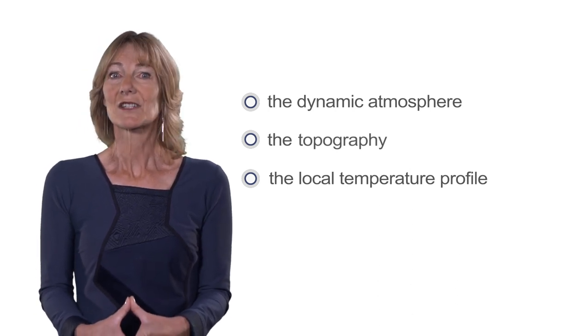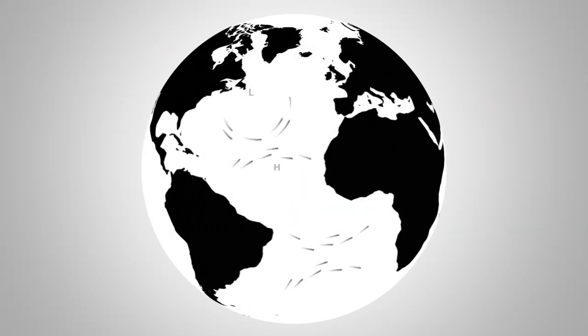Let's have a look at these three mechanisms in more detail. Firstly, turbulence linked to the dynamic atmosphere. High and low pressures around the world create flows of air producing winds of different direction and intensity.